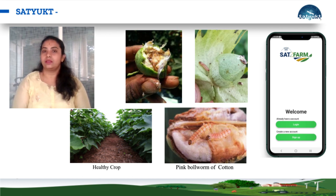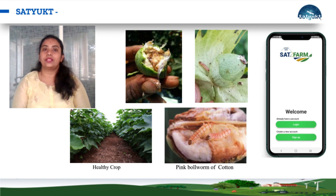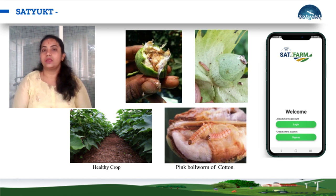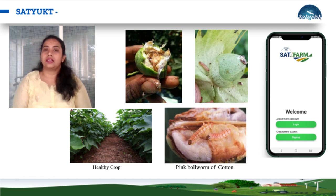So how can one manage this pest? One should always maintain sanitation in the cotton fields. This can be achieved by removing leftover plant debris from the field, and proper weeding should be carried out at regular intervals.